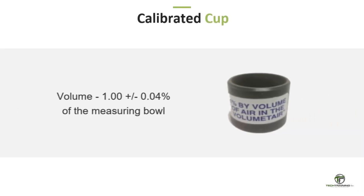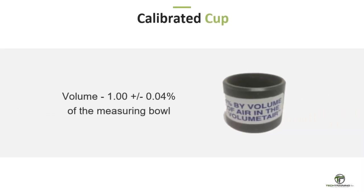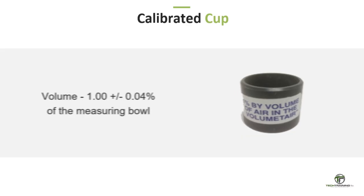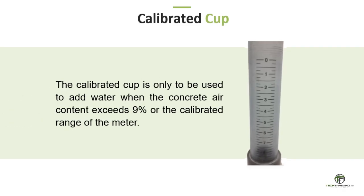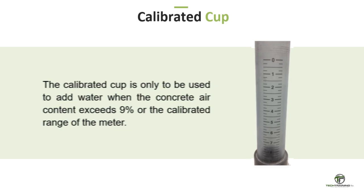We'll also need a calibrated cup — a metal or plastic cup having a capacity of or graduated in increments equal to 1.00 plus or minus 0.04% of the volume of the measuring bowl of the air meter. The calibrated cup is only to be used to add water when the concrete air content exceeds 9% or the calibrated range of the meter.